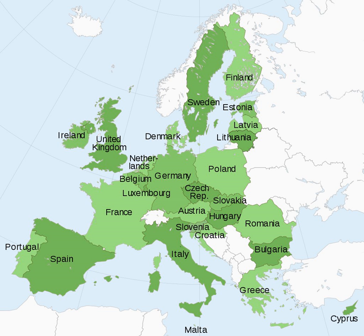There are a number of overseas member state territories which are legally part of the EU, but have certain exemptions based on their remoteness. These outermost regions have partial application of EU law and in some cases are outside of Schengen or the EU VAT area. However, they are legally within the EU and all use the euro as their currency.